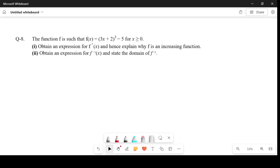This question states that function f is such that f(x) equals (3x+2)³ - 5, with domain x ≥ 0. Obtain an expression for f'(x), the derivative of f(x), and explain why f is an increasing function.